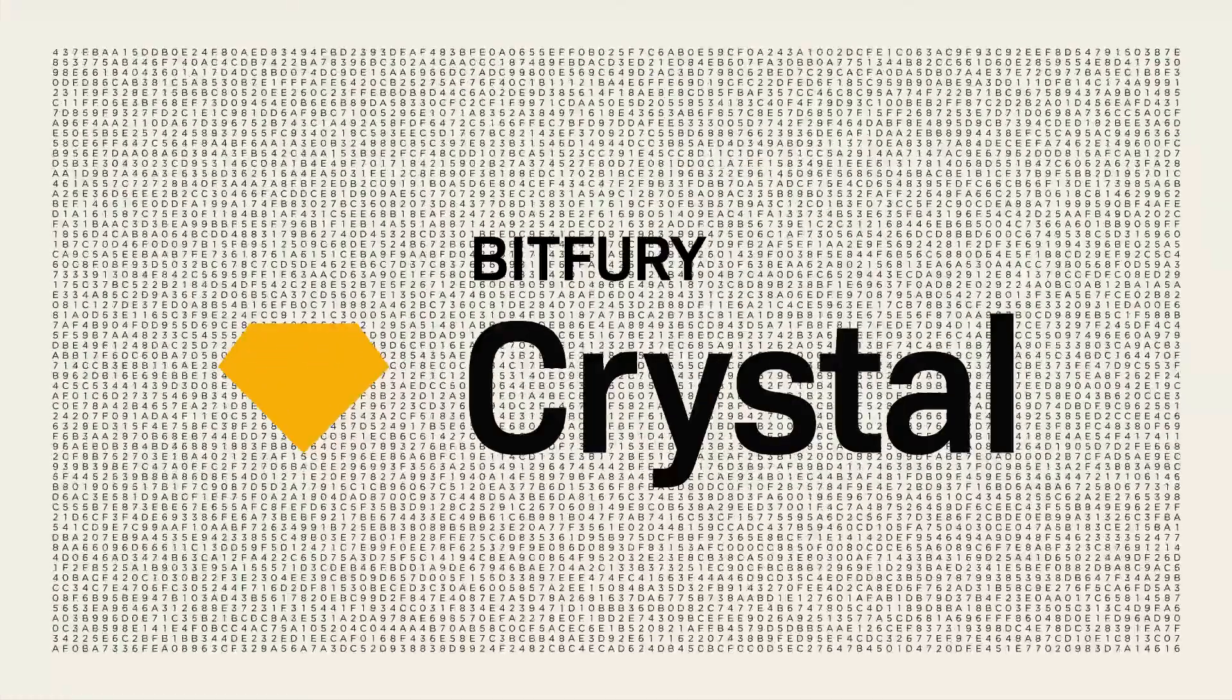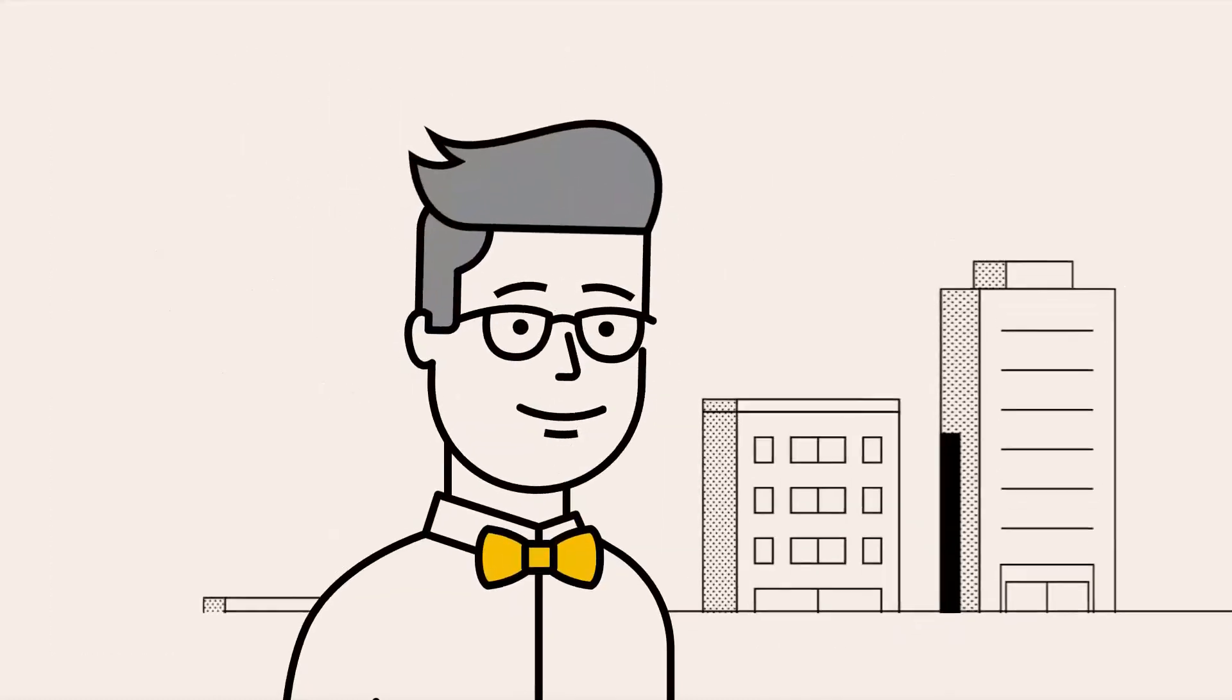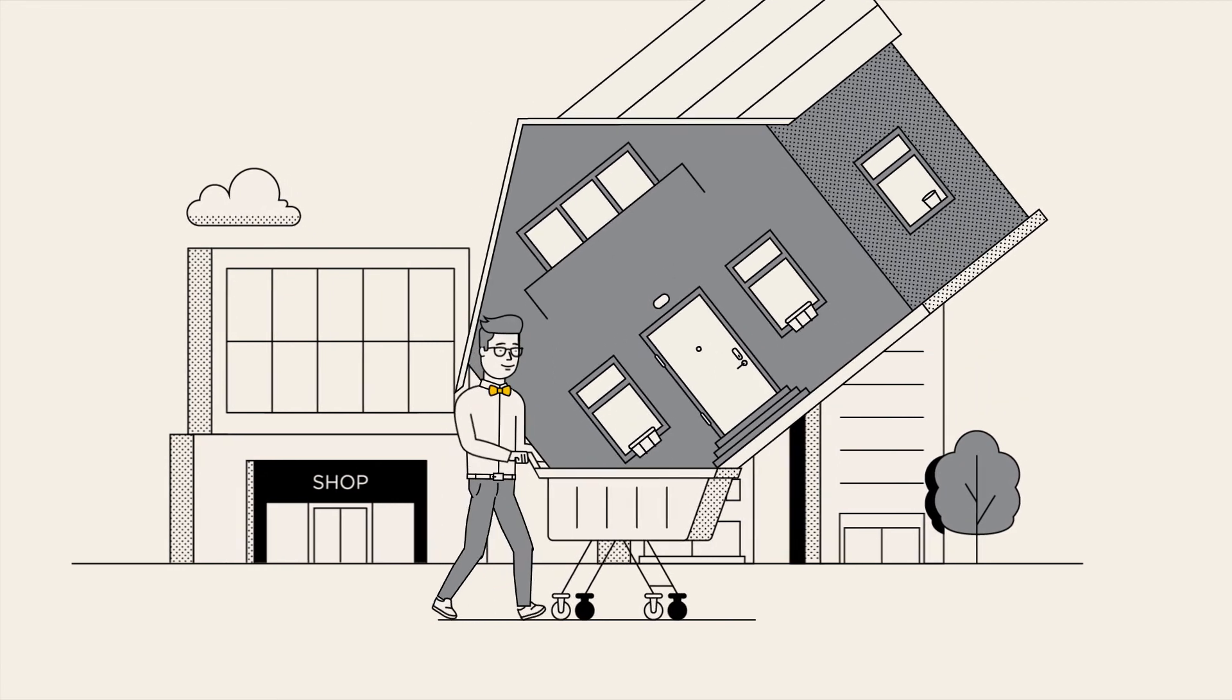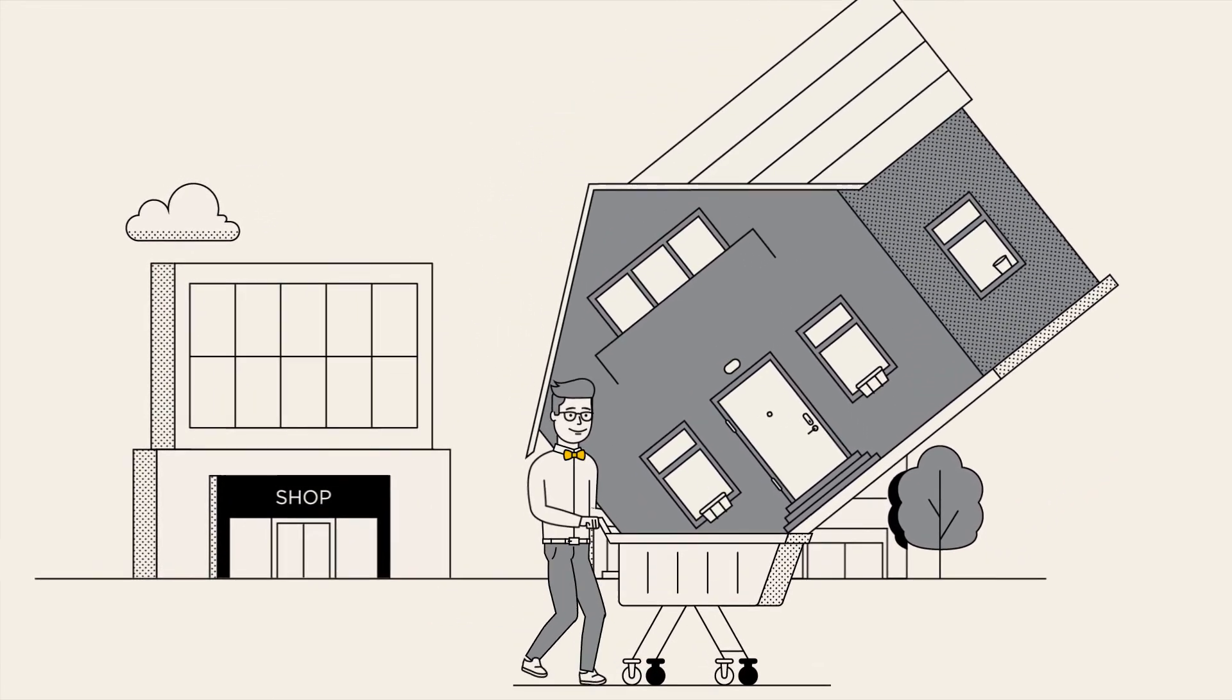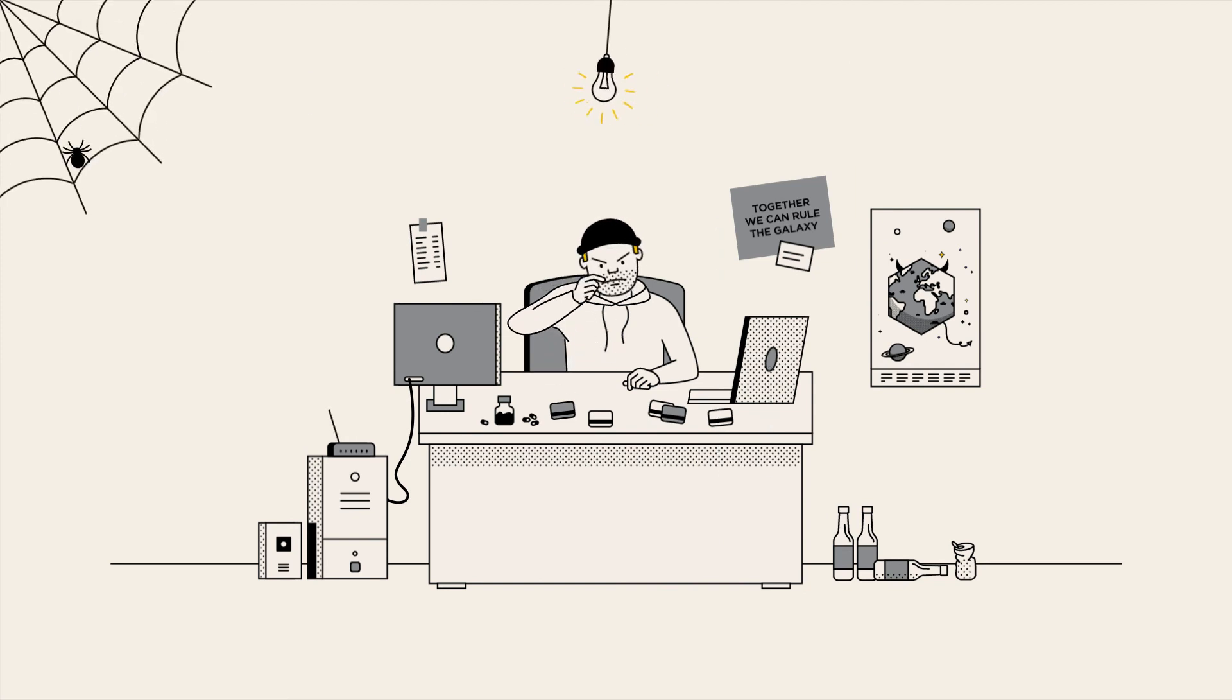This is how everybody else sees blockchain transactions, but Crystal allows you to see more. Here's Bob, a young engineer and early adopter who made a small fortune on mining and is now buying a new house for his wife and their soon-to-be-born daughter. And here's Jay, a notorious scammer selling stolen credit card numbers and buying black market pills.